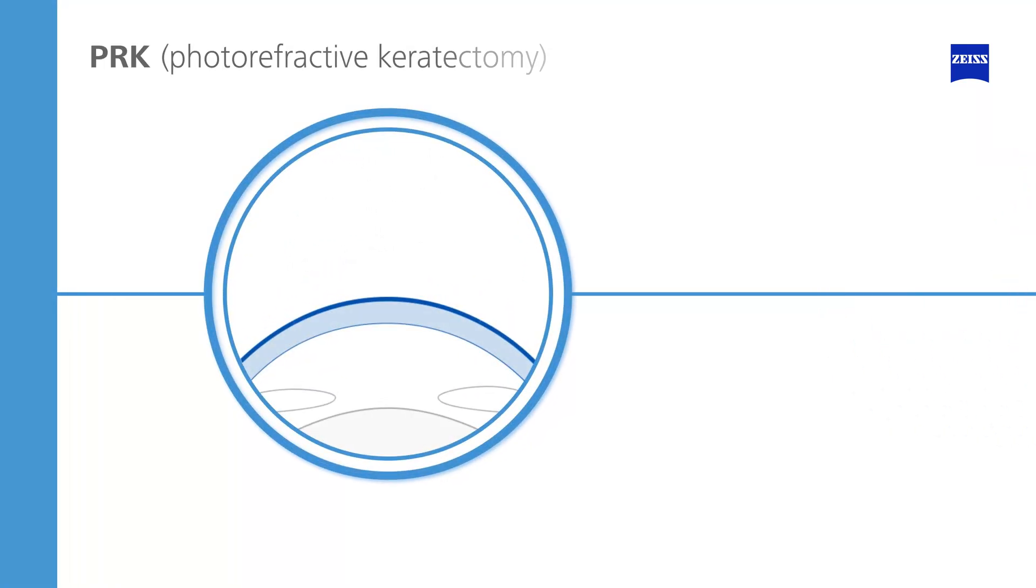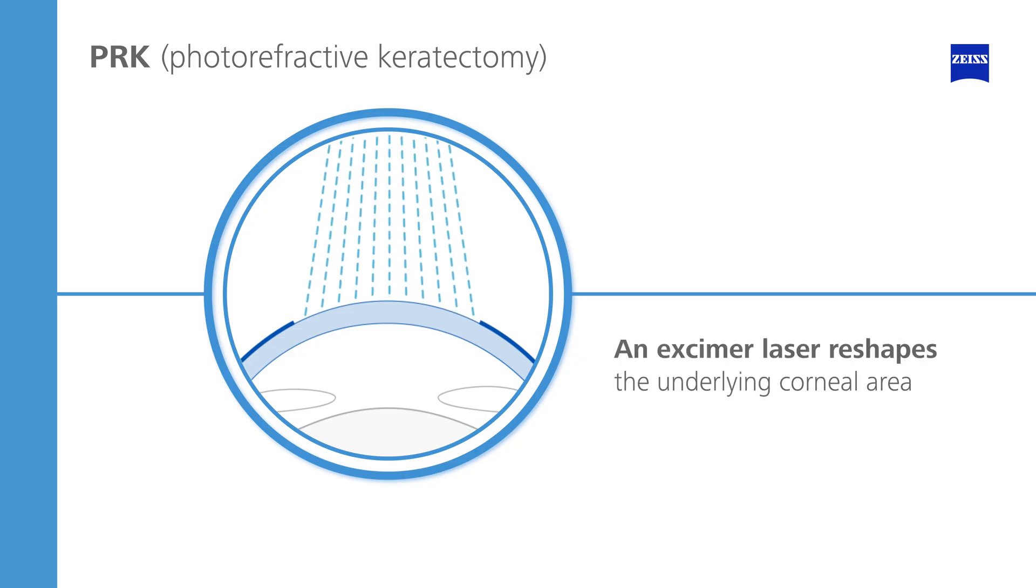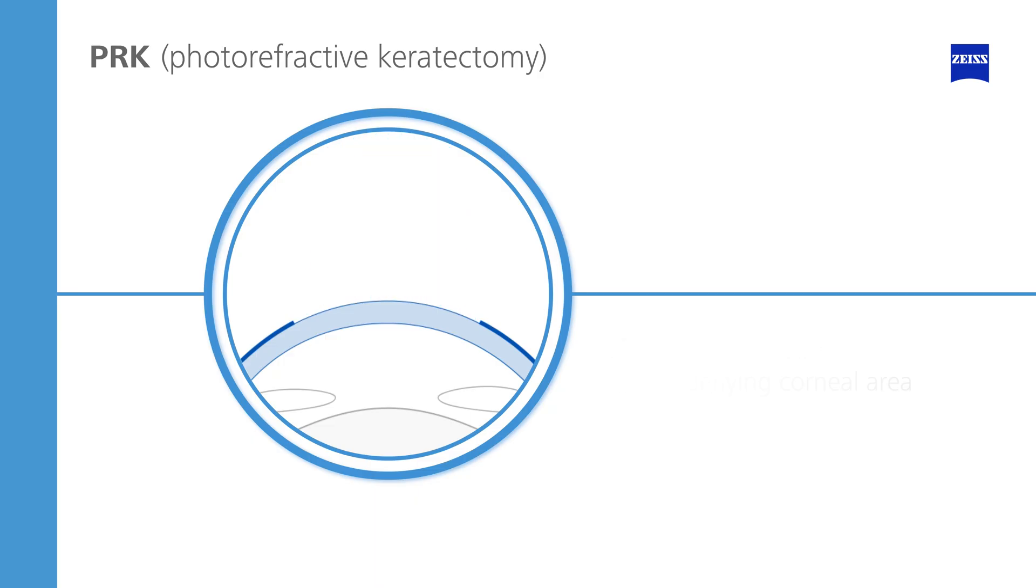During PRK, the epithelium, the upper tissue of the cornea, is completely removed. An excimer laser is then used to reshape the underlying corneal area. The epithelium grows back on its own. PRK is suitable for thin corneas. Full vision recovery takes about a month.